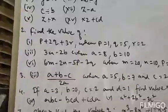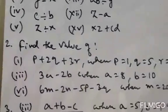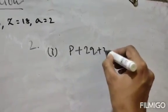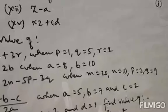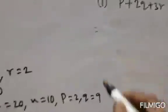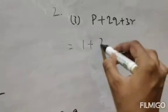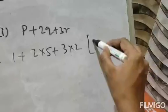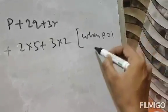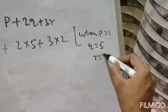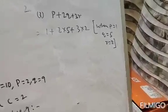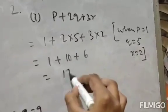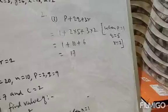Question number 2: find the value of the expression p plus 2q plus 3r. Values given are p=1, q=5, and r=2. So substituting: 1 plus 2×5 plus 3×2 = 1 plus 10 plus 6 = 17. The answer is 17.